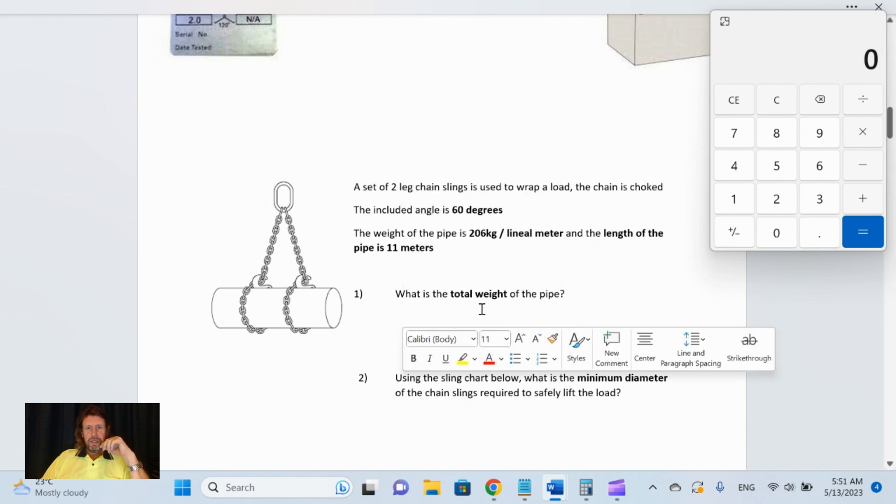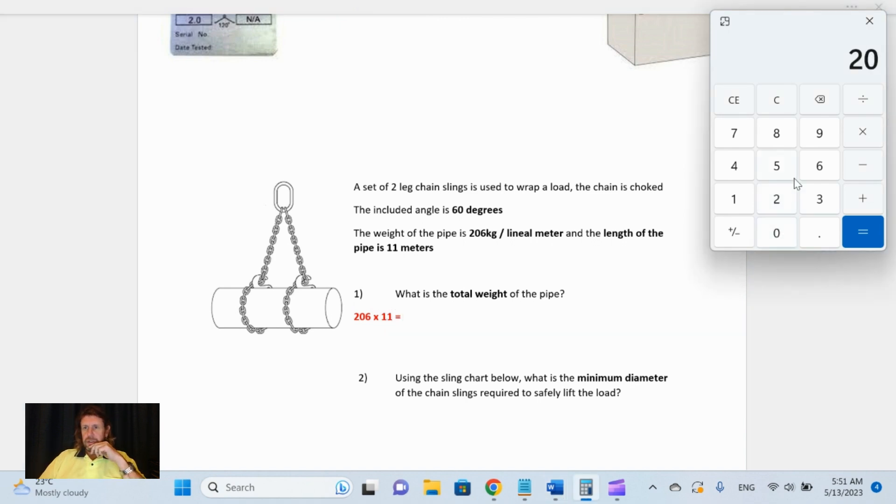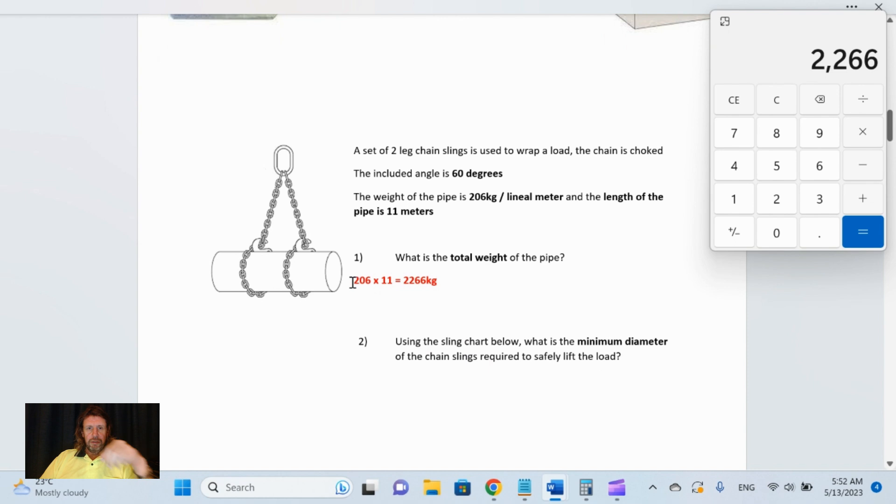We need to calculate: 206 kilograms multiplied by 11 equals 2266 kilograms.